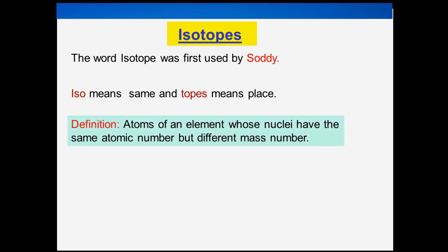We can define isotopes as atoms of an element whose nuclei have the same atomic number but different mass numbers. Atoms of an element can differ in numbers of neutrons.